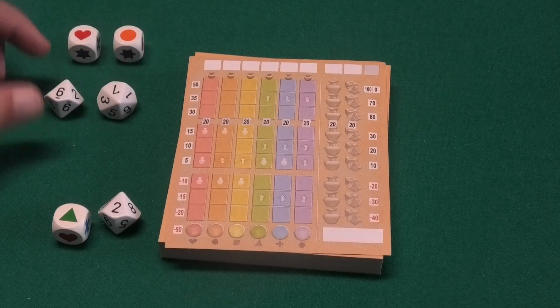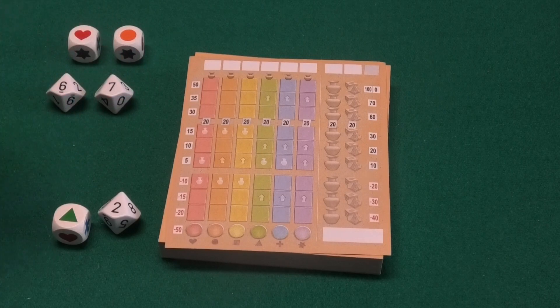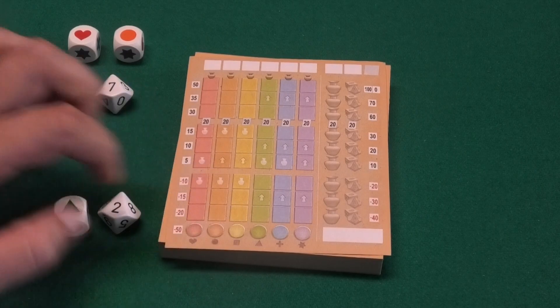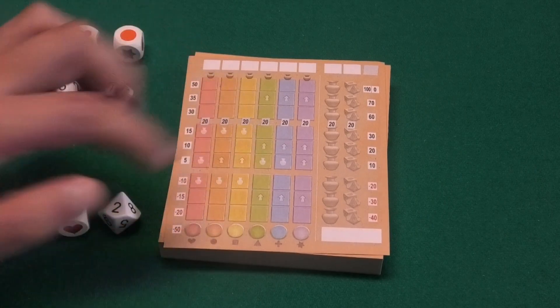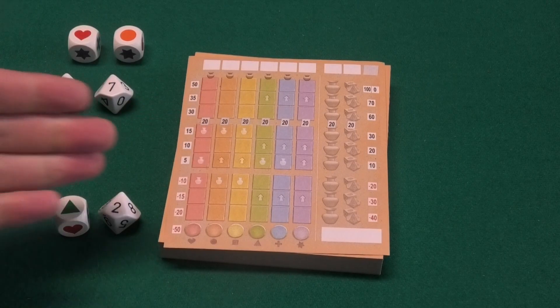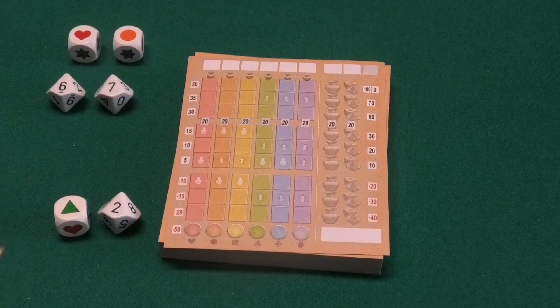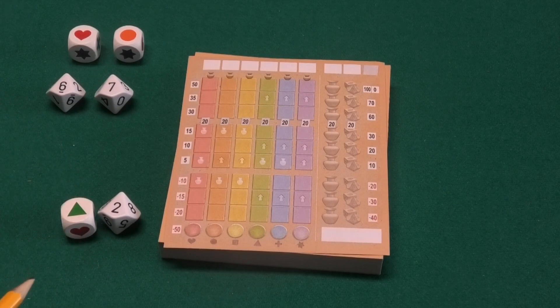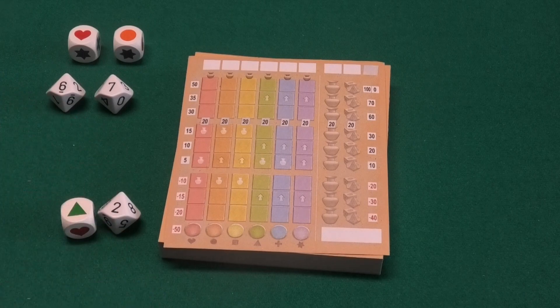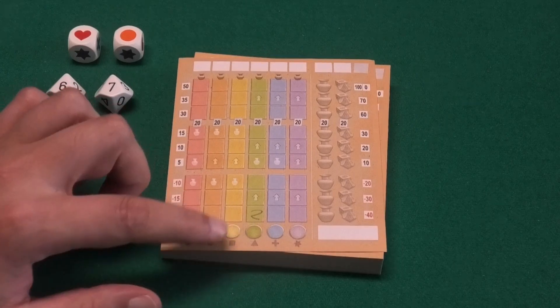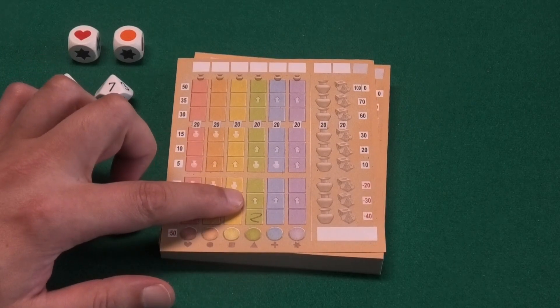For me, I can take the two green. That means I can put a number two in the green expedition. Normal Lost Cities has five expeditions, in this case we have six. If you have troubles with colors you can also recognize them by the symbols. So in this case I would write down number two on the bottom of my expedition.